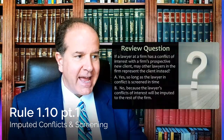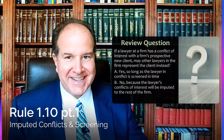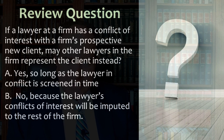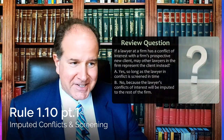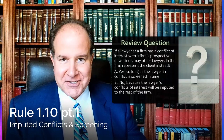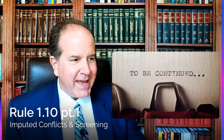Here's a quick review question: if a lawyer at a firm has a conflict of interest with a firm's prospective new client, may other lawyers in the firm represent the client instead? A: yes, so long as the lawyer in conflict is screened in time; or B: no, because the lawyer's conflicts of interest will be imputed to the rest of the firm. That's supposed to be an easy question — if you don't know the answer, you should rewatch this video. That concludes this video about ABA Model Rule 1.10. We have another video where we'll talk about some of the most important comments.